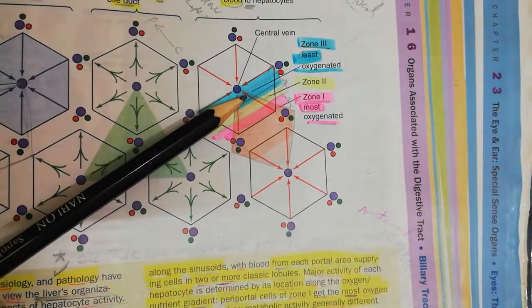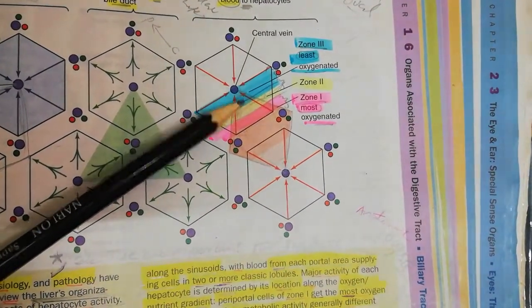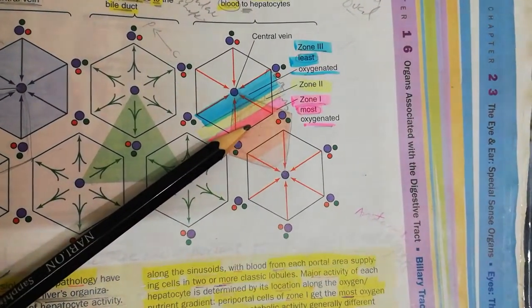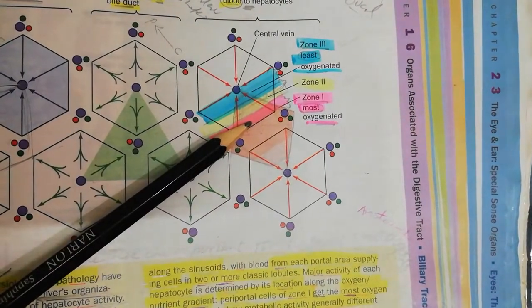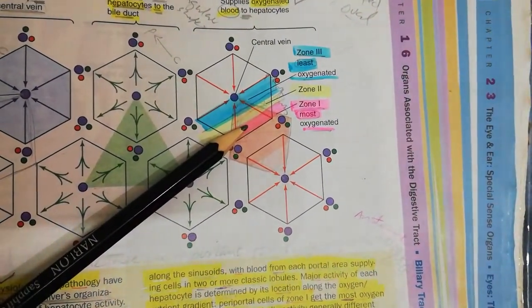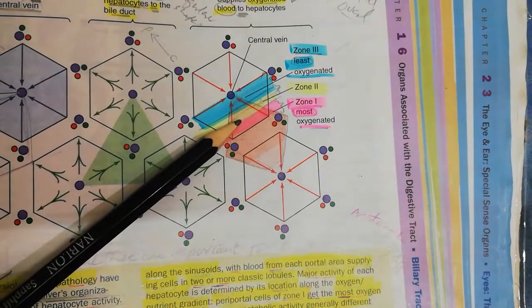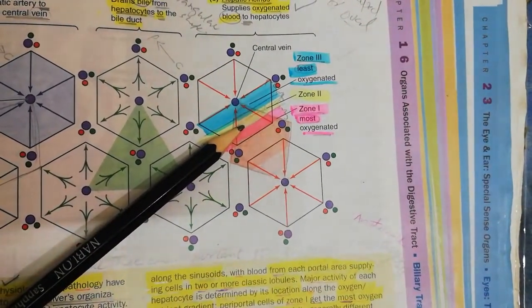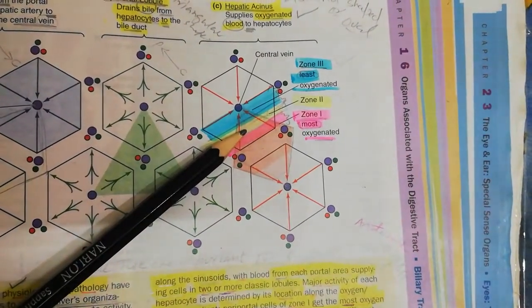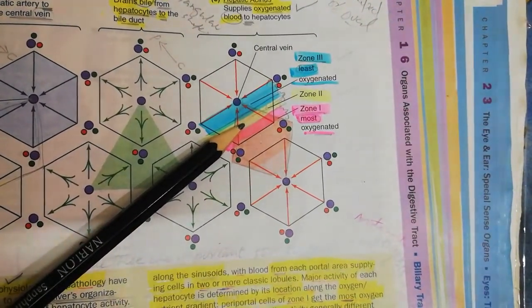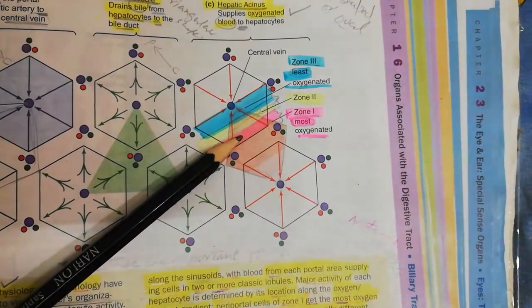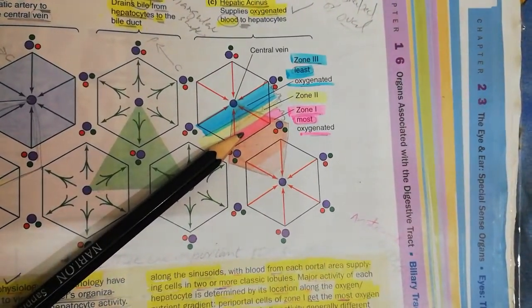These hepatocytes are called periportal hepatocytes. They are nearest to the hepatic artery, so here they get more oxygen and nutrition. They can mostly carry out functions requiring oxidative metabolism such as protein synthesis. That was all about zone 1.